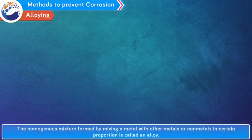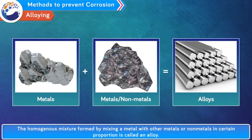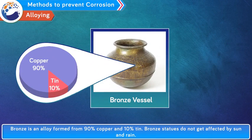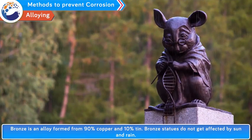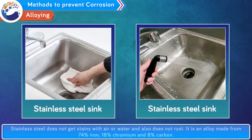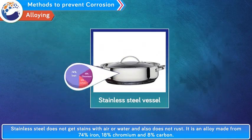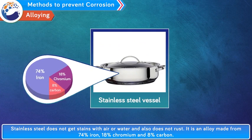Alloying: the homogeneous mixture formed by mixing a metal with other metals or non-metals in a certain proportion is called an alloy. For example: 1. Bronze is an alloy formed from 90% copper and 10% tin — bronze statues do not get affected by sun and rain. 2. Stainless steel does not get stains with air or water and does not rust — it is an alloy made from 74% iron, 18% chromium and 8% carbon.